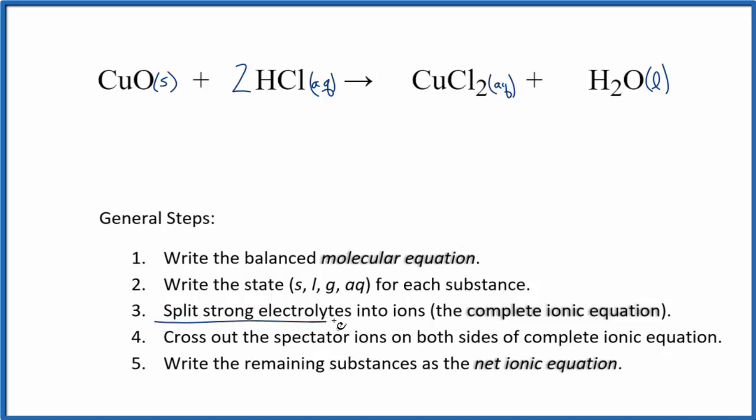Now, we can split the strong electrolytes into their ions. And that's called the complete or total ionic equation. To do that, we do need to know their charges. For copper oxide, copper 2 oxide, since it's a solid, we don't need to worry about that.